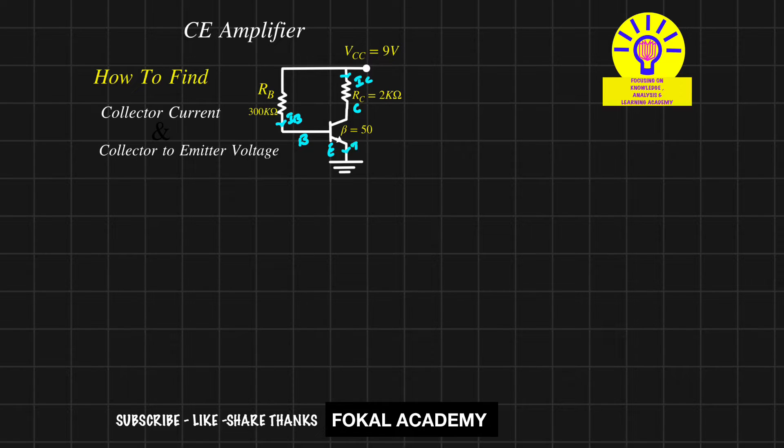In this transistor, for any silicon transistor, the base to emitter voltage drop is constant. That is, the cut-in voltage is 0.7 volts.